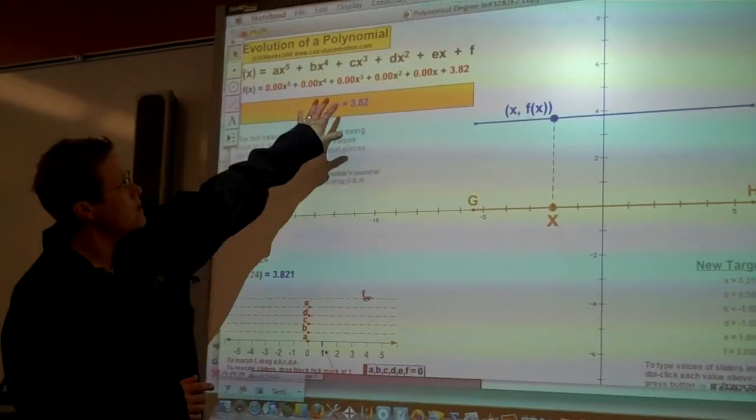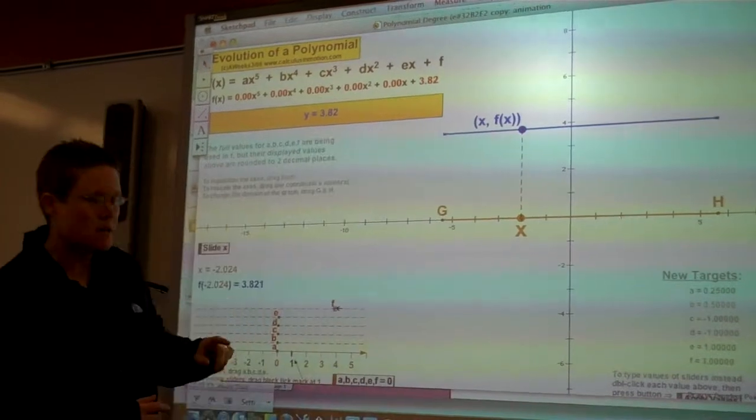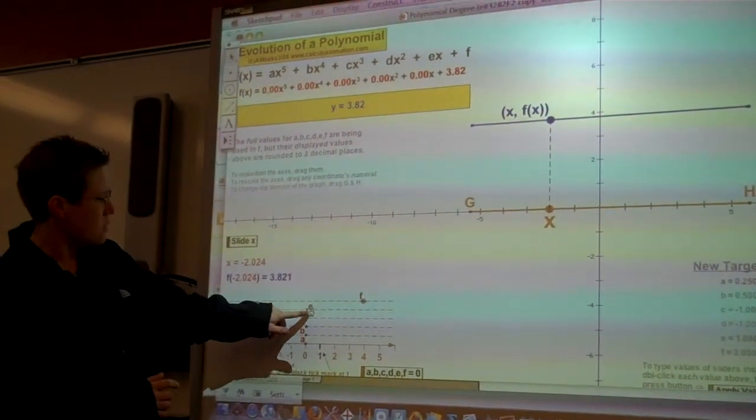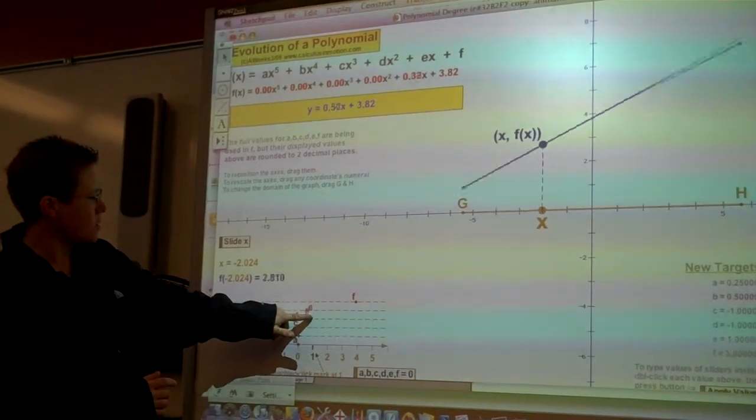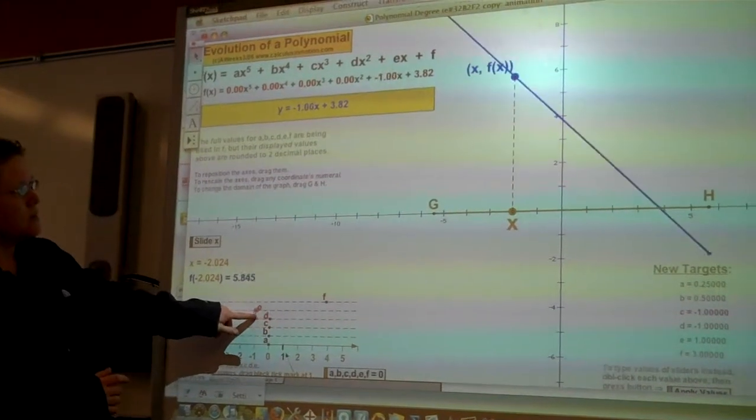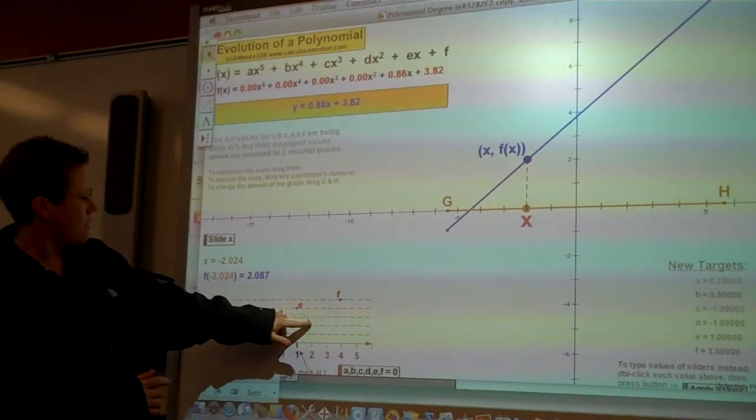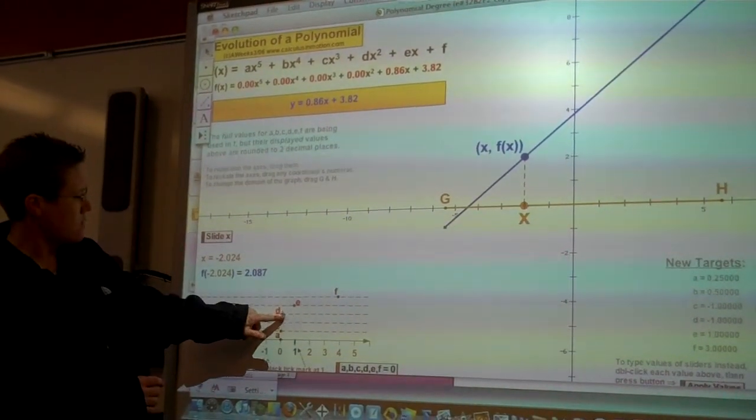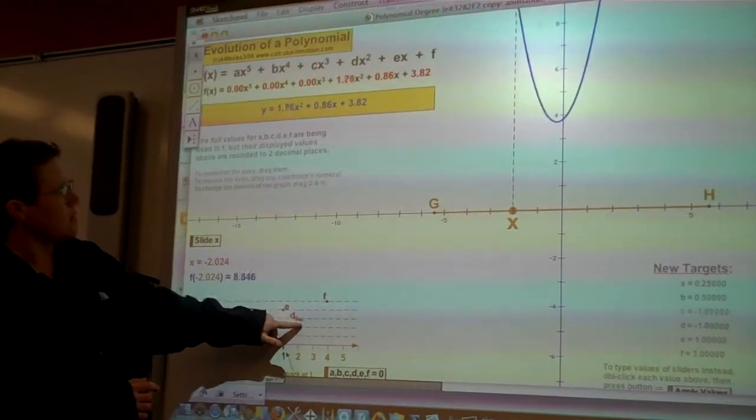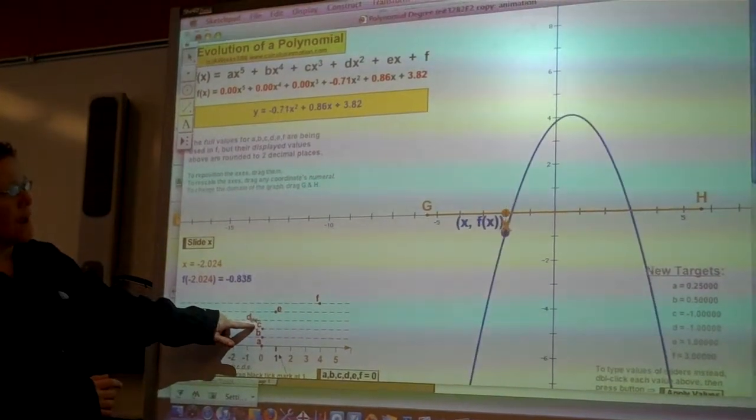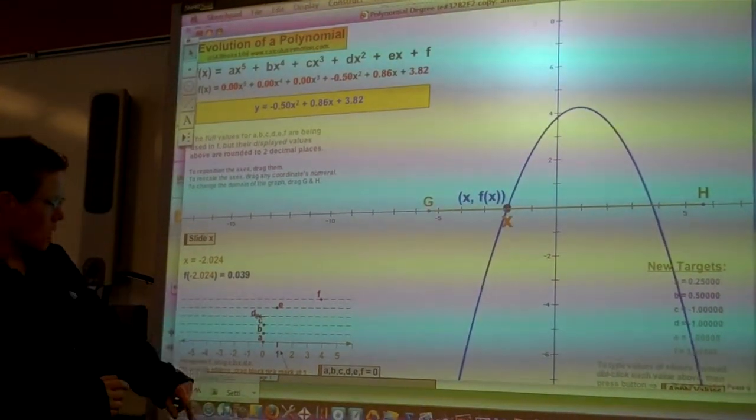If we have not just a constant, but a value that's other than zero, then we can look at the function of a linear polynomial. When I change d to have a constant other than zero, we're now looking at a quadratic function and so on.